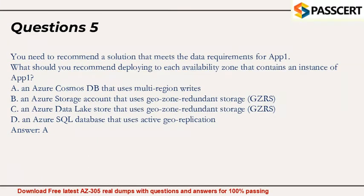Question 5: You need to recommend a solution that meets the data requirements for App 1. What should you recommend deploying to each availability zone that contains an instance of App 1? A. An Azure Cosmos DB that uses multi-region writes, B. An Azure Storage Account that uses geo-zone redundant storage (GZRS), C. An Azure Data Lake Store that uses geo-zone redundant storage (GZRS), D. An Azure SQL Database that uses active geo-replication. Answer: A.